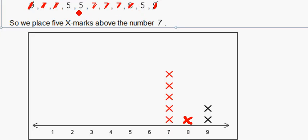Then we have 1, 2, 3 fives. So we go above our 5 and do 1, 2, 3 X marks on our line plot. Cross out our 5's.